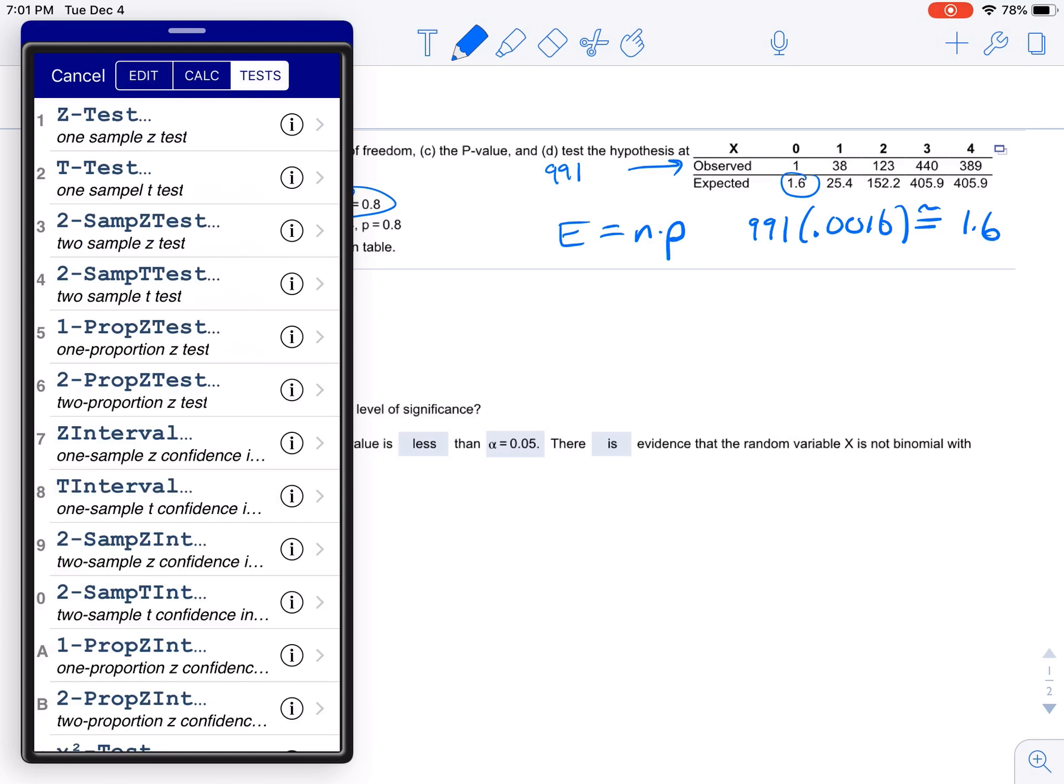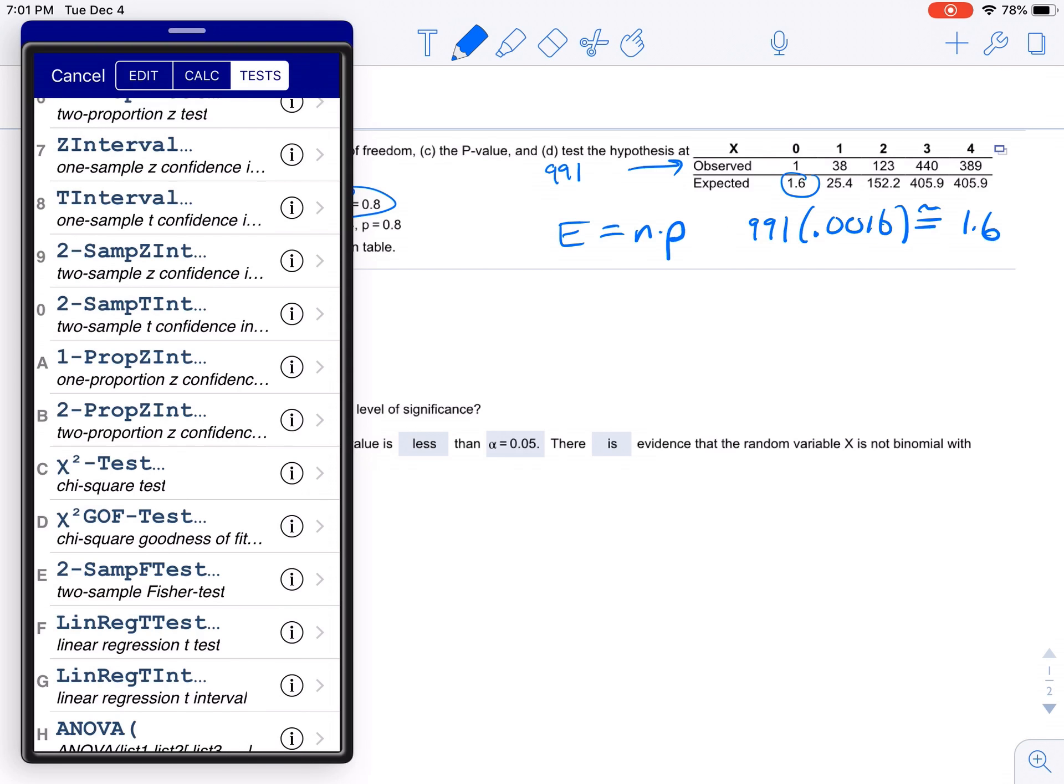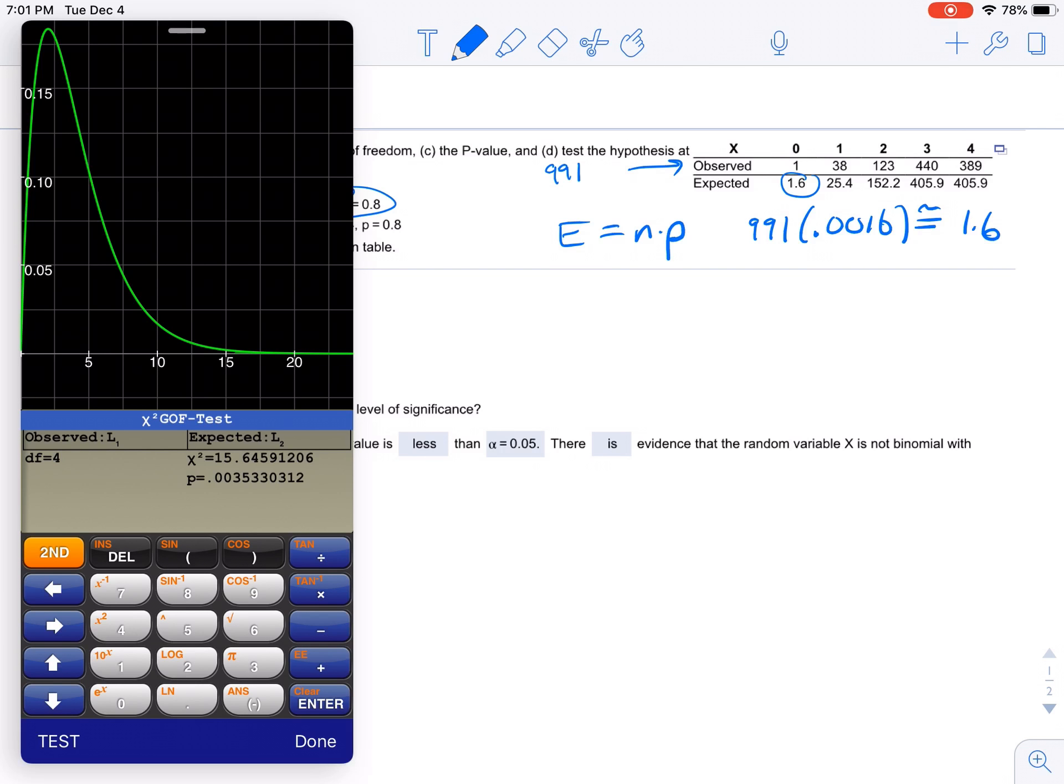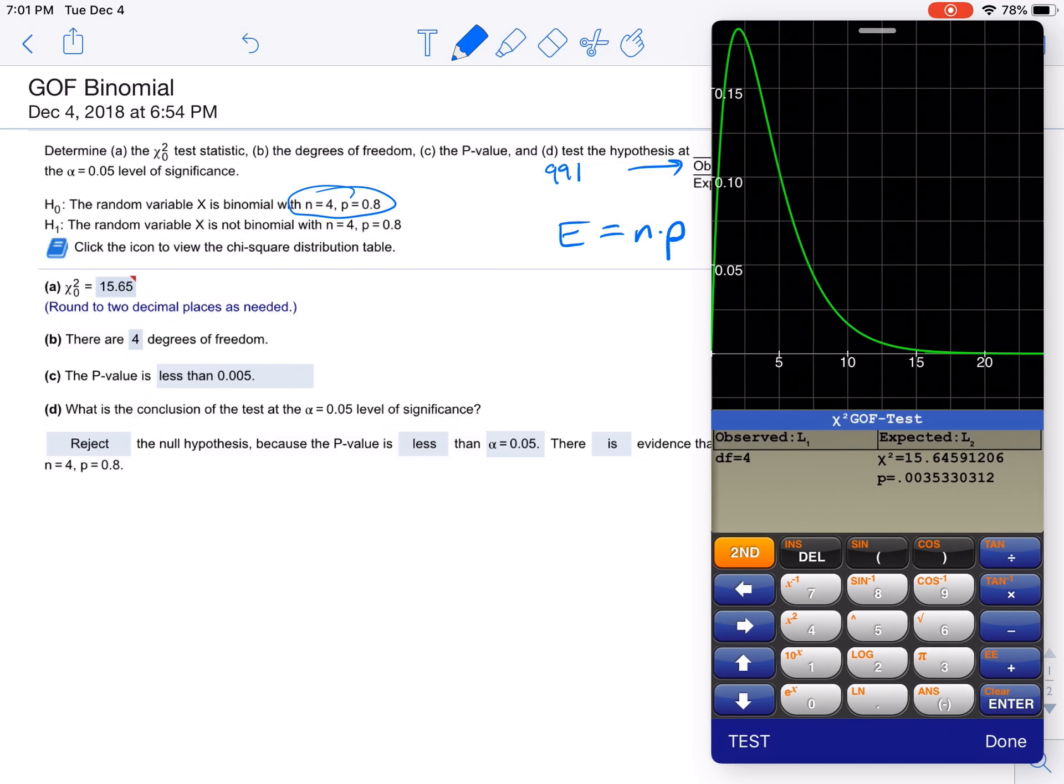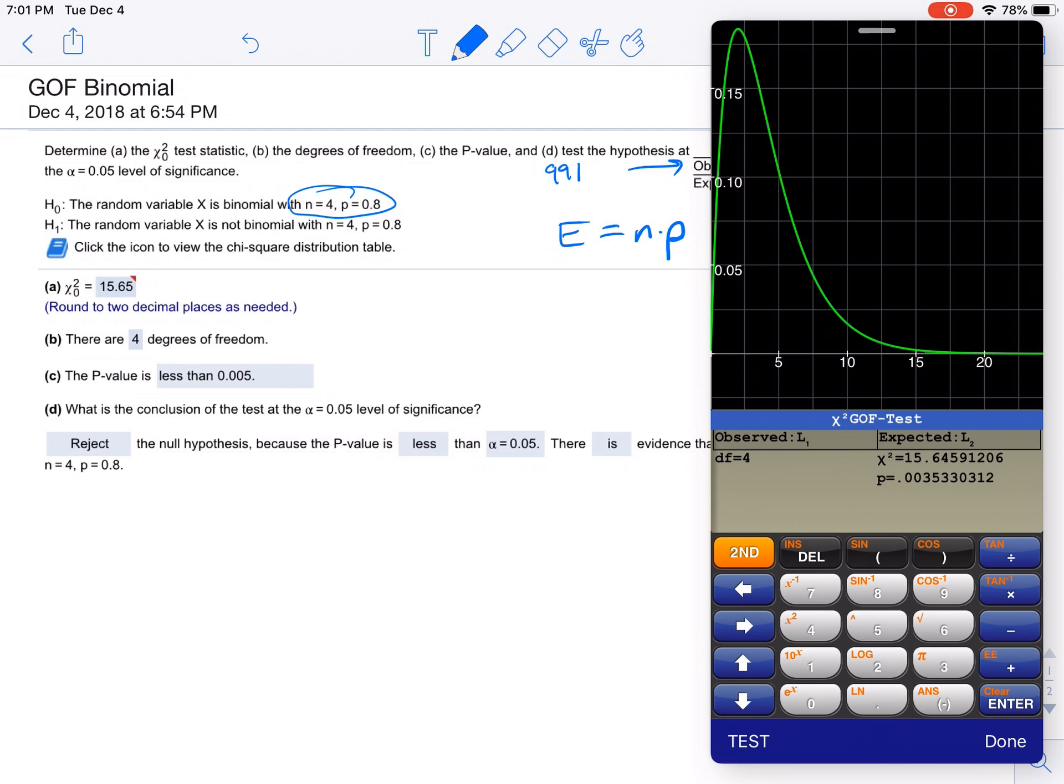So if I go to stat, test, chi-square, goodness of fit, with degrees of freedom of 4, I have the chi-square test statistic is 15.65. That's correct. Degrees of freedom are 4. The p-value is 0.00353, so that's less than 0.005.